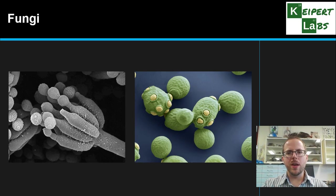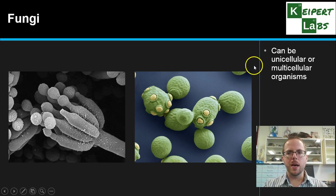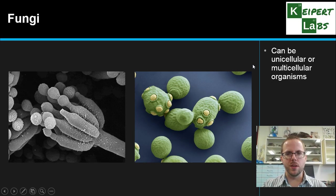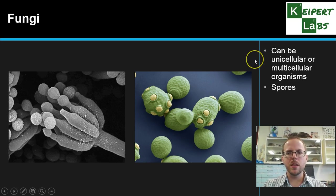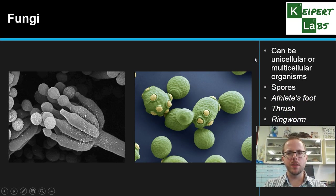Other than bacteria, we also have fungi. You can see some examples of mould here, and also baker's yeast — a good fungus we use to make beer and bread. Fungi can be unicellular or multicellular organisms. Mushrooms are in the fungi family, but they're not typically the ones we think of as pathogens. Fungi reproduce by producing spores which get released — their version of seeds. Examples of fungal diseases include athlete's foot, thrush, and ringworm.